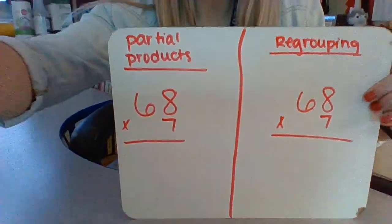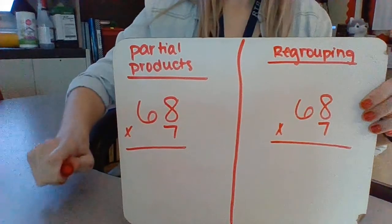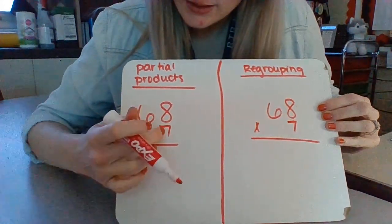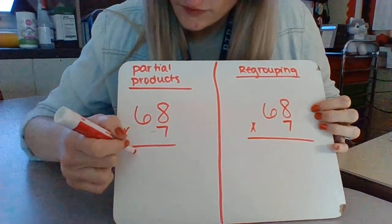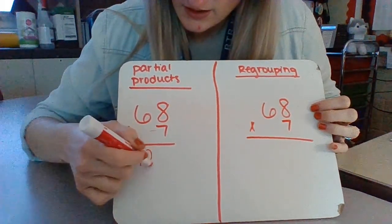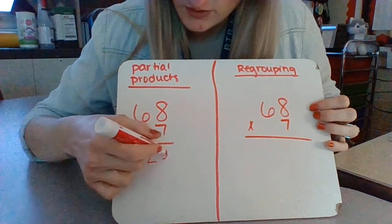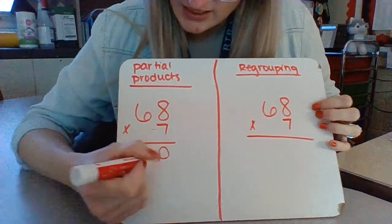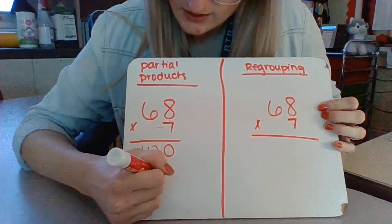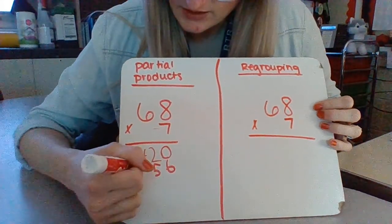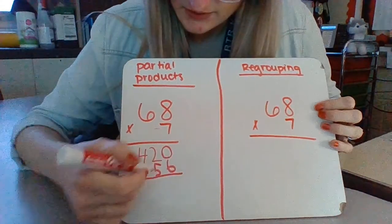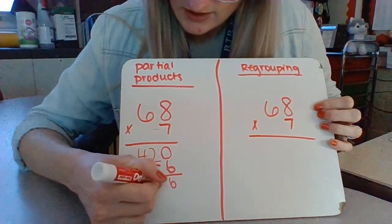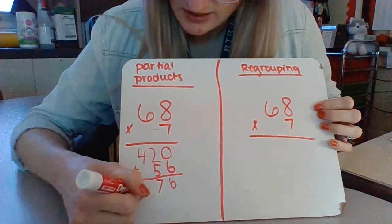So to do partial products, we have to take 7 times 6, which we know is 42, and since we're in the tens place we have 10. 7 times 8 is 56. Then we add our two numbers together: 0 plus 6 is 6, 2 plus 5 is 7, and 4 plus nothing is 4.